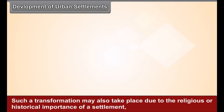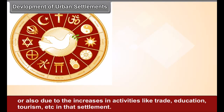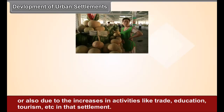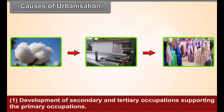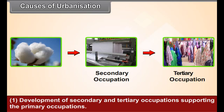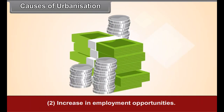Such a transformation may also take place due to the religious or historical importance of a settlement, or also due to the increase in activities like trade, education, tourism, etc. in that settlement. Causes of urbanization: Development of secondary and tertiary occupations supporting the primary occupations; increase in employment opportunities; migration of people from the surrounding areas and increase in the population.